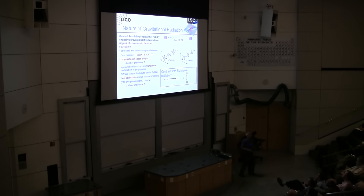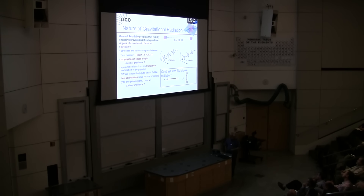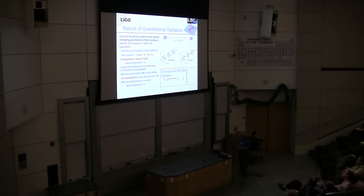Some of the basic properties as predicted by general relativity: gravitational waves will propagate at the speed of light. They stretch and squeeze the space between objects. So by measuring the distance between objects, we can see the strain — a unitless quantity — that they experience due to gravitational waves, due to the curvature of space and time between those objects. In the language of quantum mechanics, the graviton — the carrier of gravitational waves in the same way that a photon carries electromagnetic radiation — would be massless.